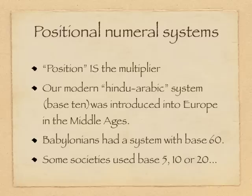The Babylonians had a positional numeral system that used base sixty. Many societies had positional numeral systems. Most of the time they were base ten, but there were some with base five or base twenty.